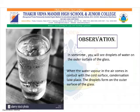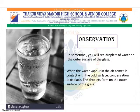After conducting the activity, you will notice droplets of water on the outer surface of the glass. When the water vapor in the air comes in contact with a cold surface, condensation takes place. For example, during summer when you take out a bottle of chilled water, you notice small bits of water on the bottle later. That is exactly what condensation is.